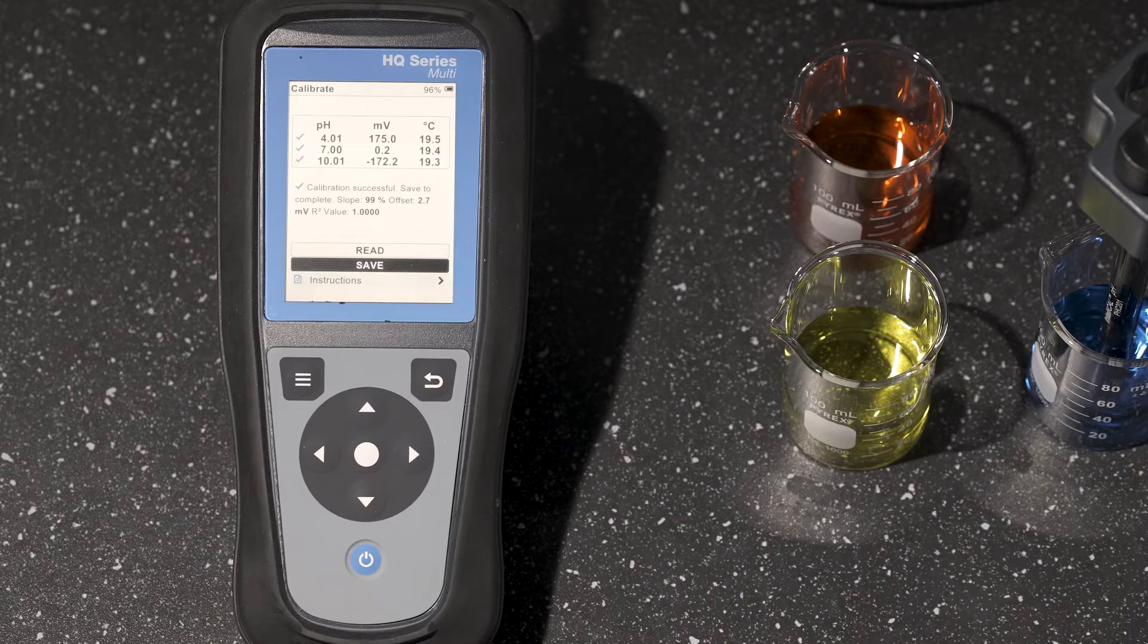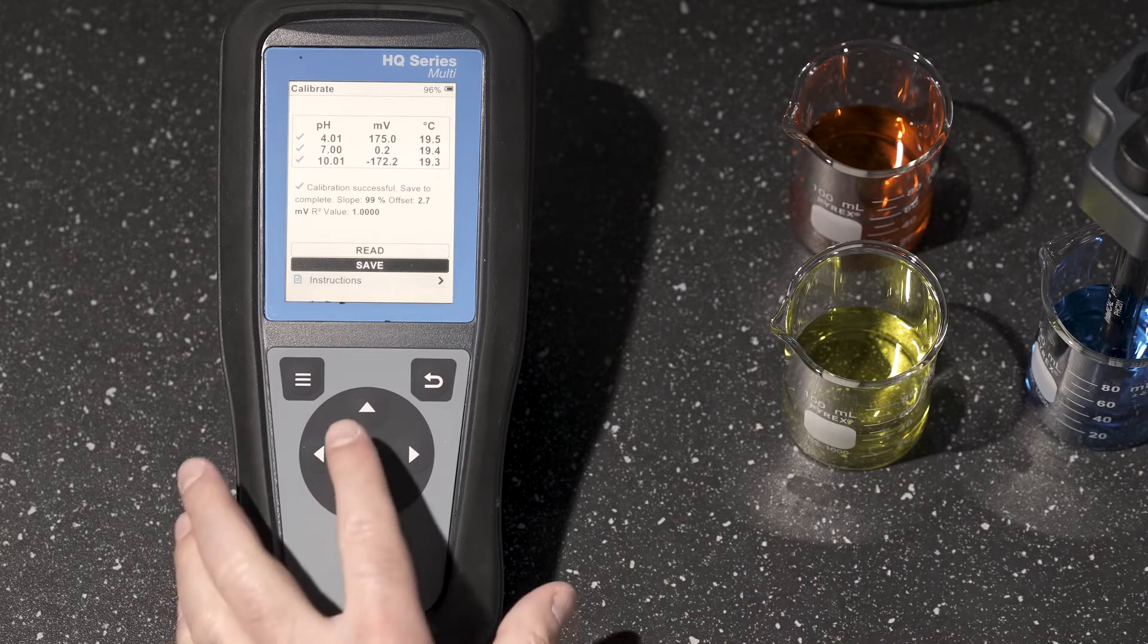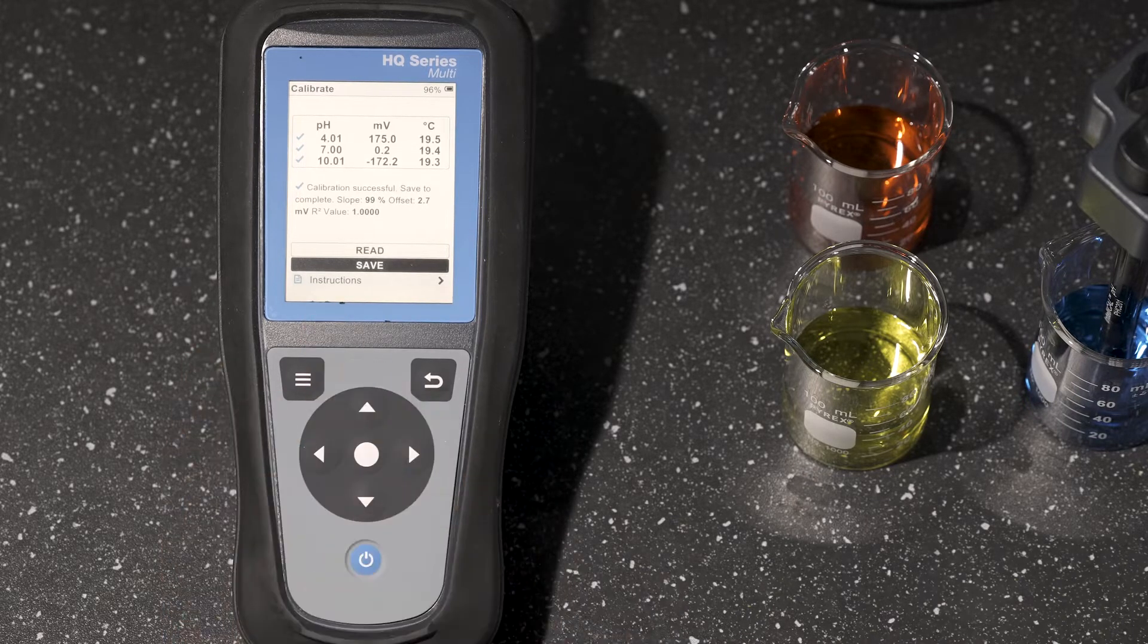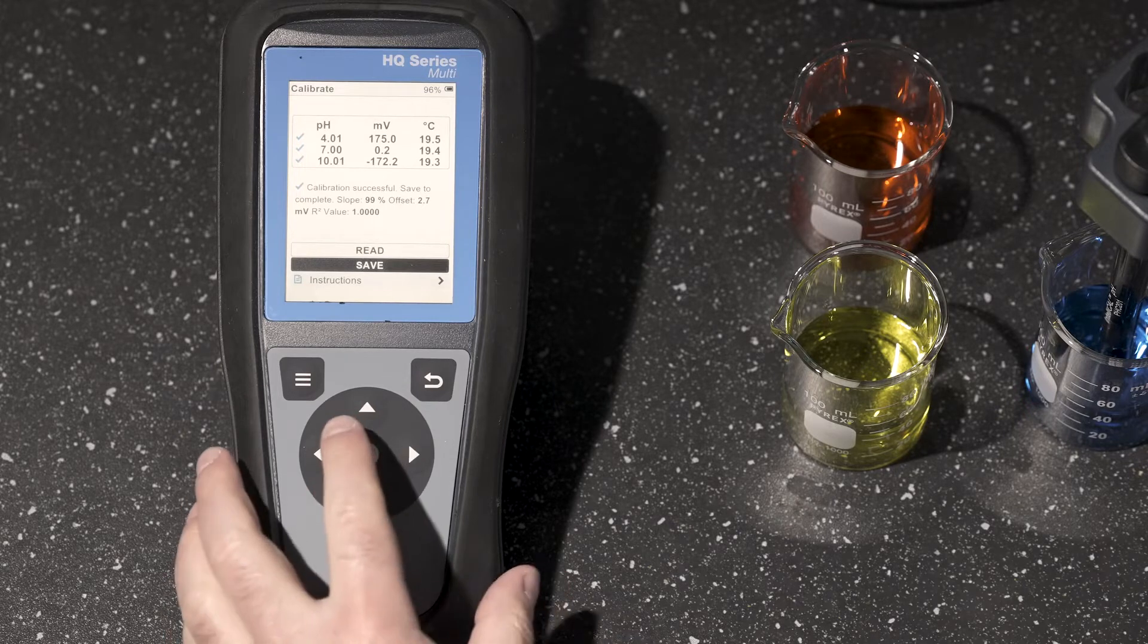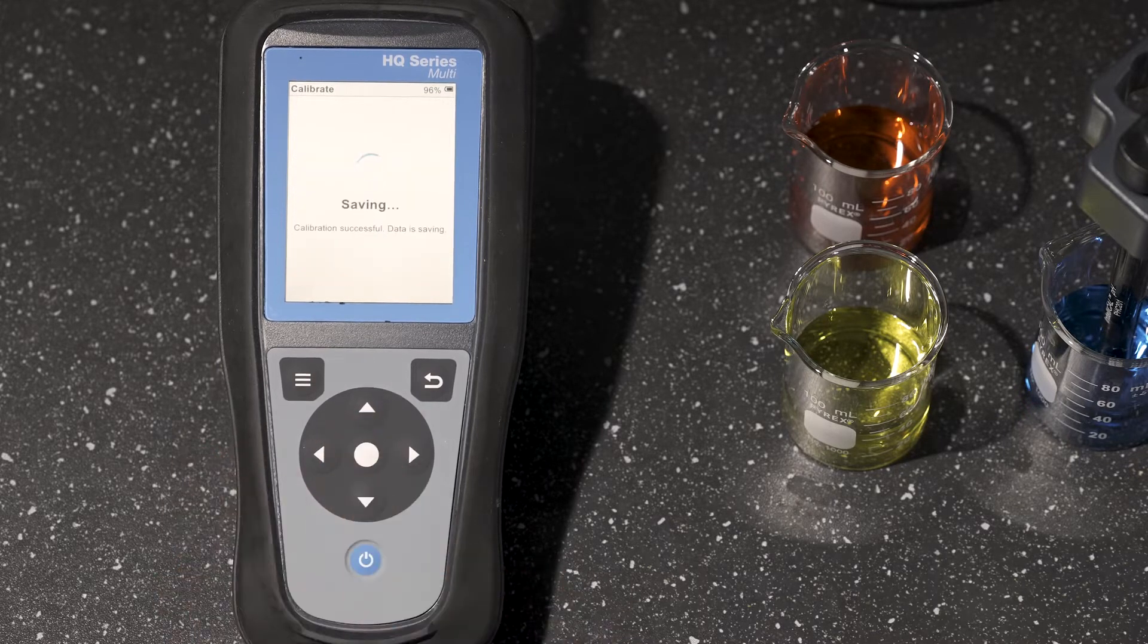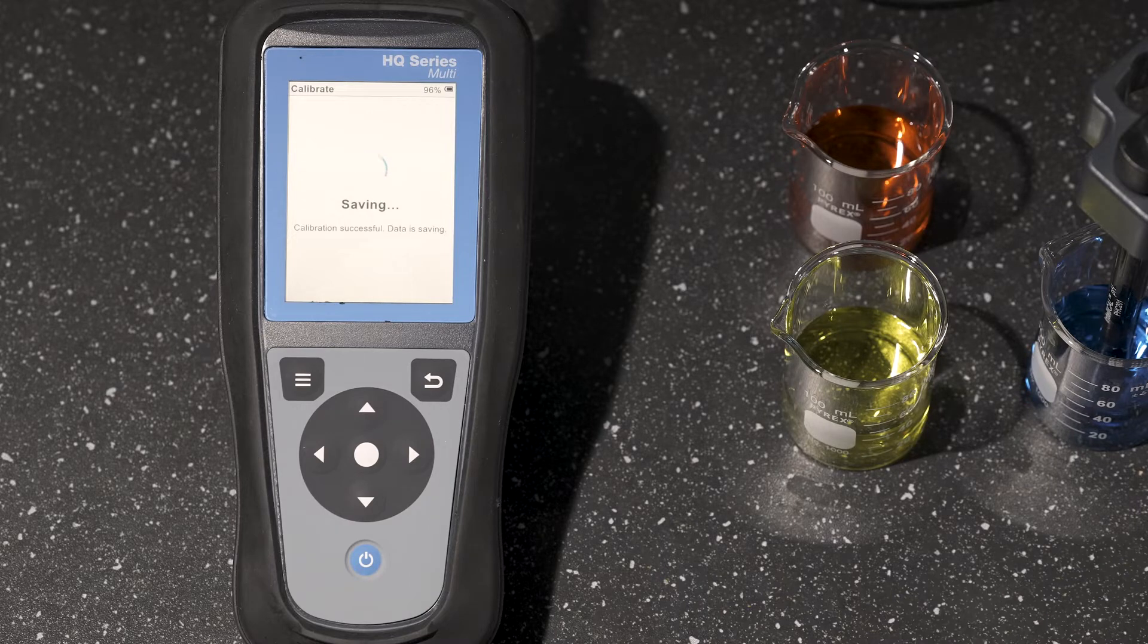There we can see calibration was successful. I can then choose to go ahead and save this. You'll also note the slope and offset is also indicated. After I choose save, there'll be a brief thinking window and then we're ready to begin measurement.